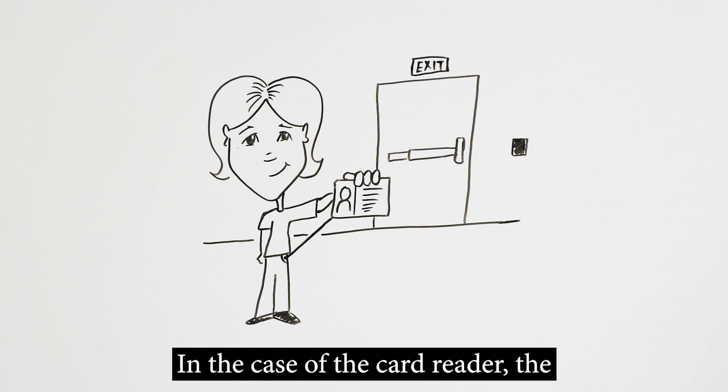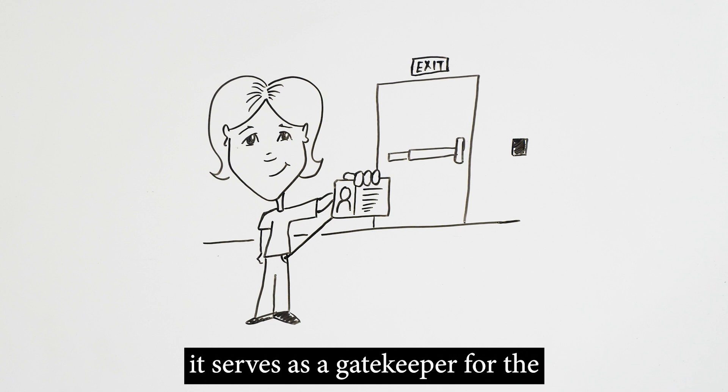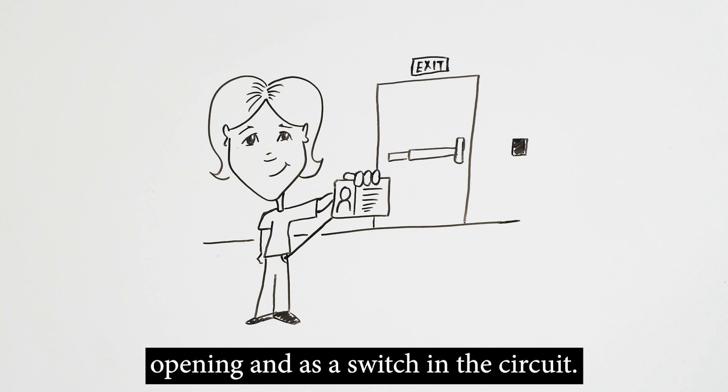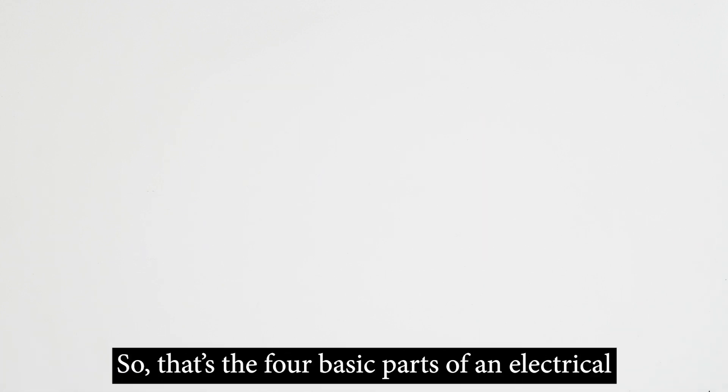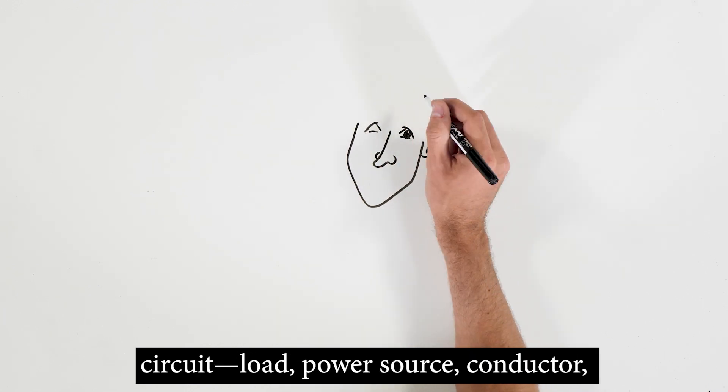In the case of the card reader, the reader is performing two functions. It serves as a gatekeeper for the opening and as a switch in the circuit. So, that's the four basic parts of an electrical circuit.